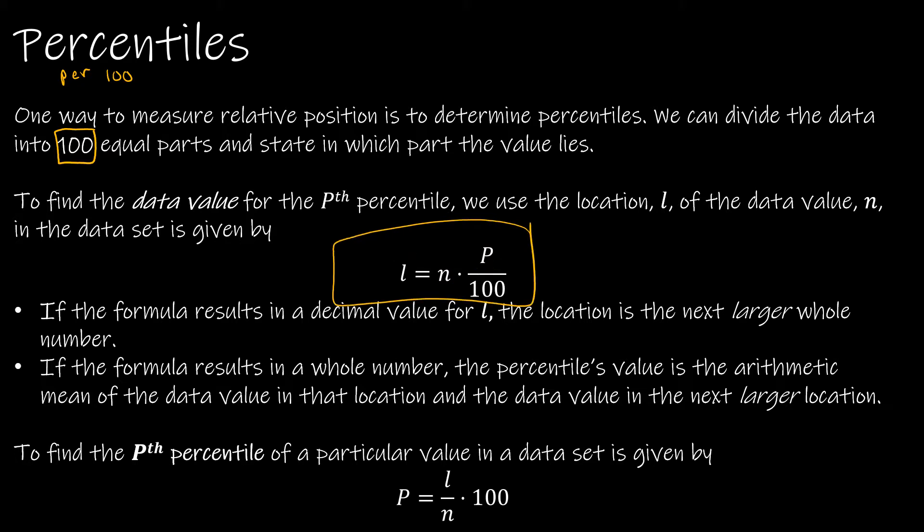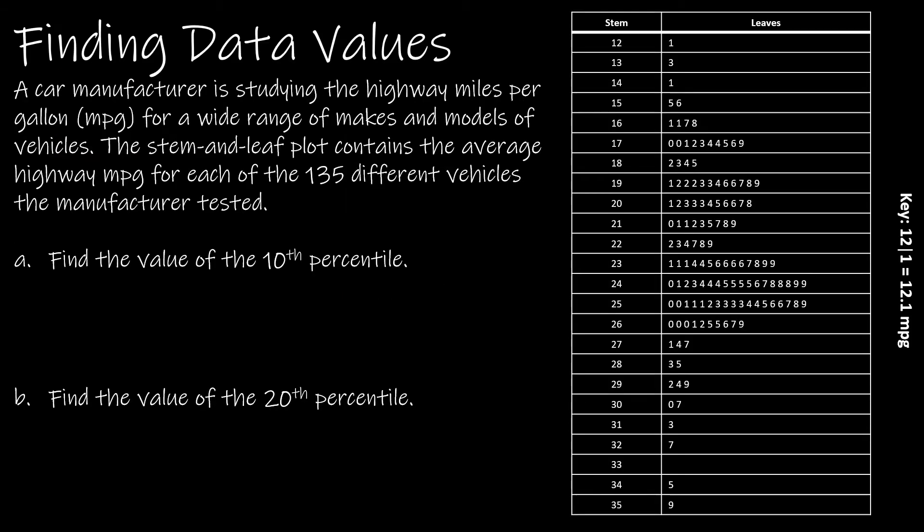For finding the actual data value, the first thing I'm going to do is note that I have 135 different vehicles. Obviously this information is given in a stem and leaf plot, which is one of my least favorite displays, but at least all of the data is visible to us here. So N equals 135, the number of data values. Now if I'm trying to find the 10th percentile, I'm going to put 10 over 100, or 0.10.